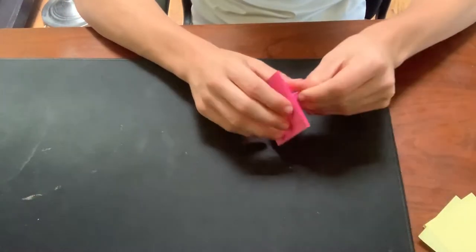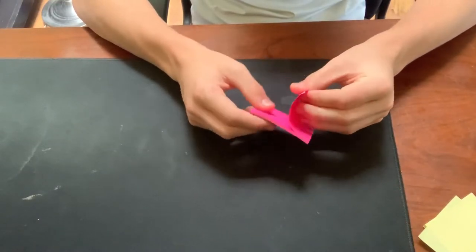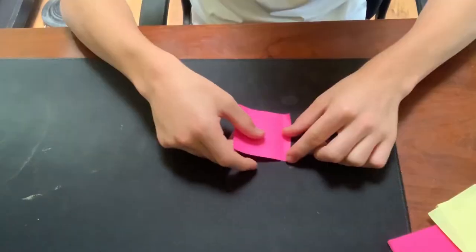First things first, you need some sticky notes. Grab the sticky notes and you're going to fold in half hot dog style.